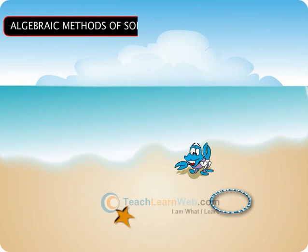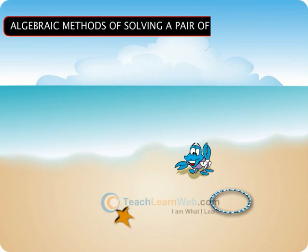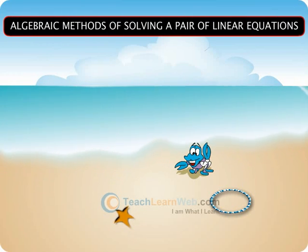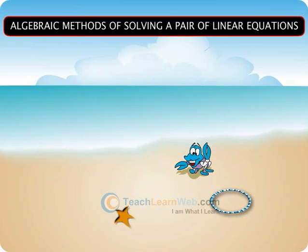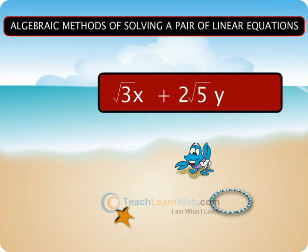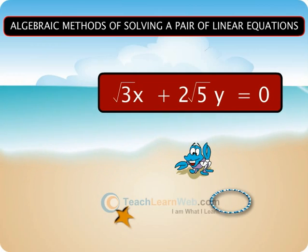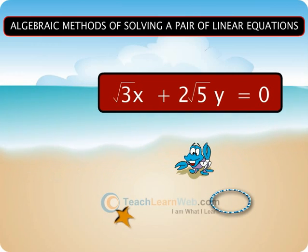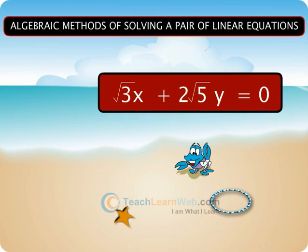Algebraic Methods of Solving a Pair of Linear Equations. Till now we have learned to solve a pair of linear equations graphically. But what about equations like root 3x plus 2 root 5y is equal to 0? It is difficult to represent such a line on the Cartesian plane, and there is every possibility of making mistakes while reading such coordinates.